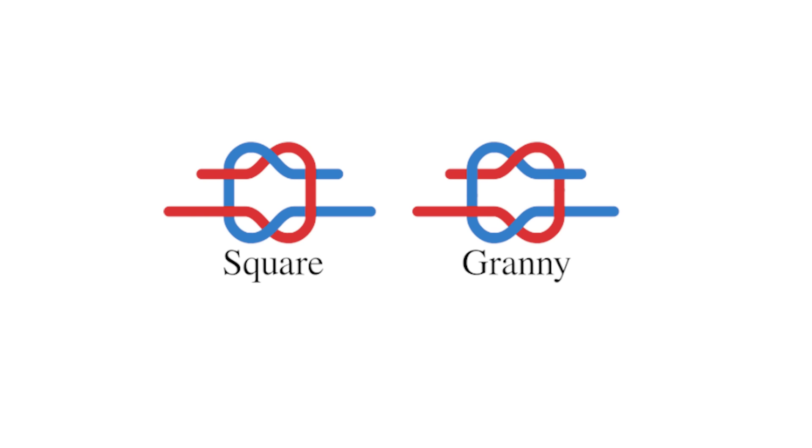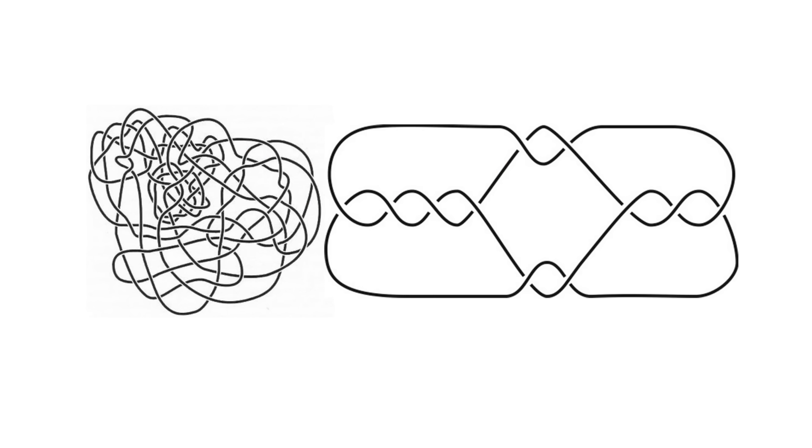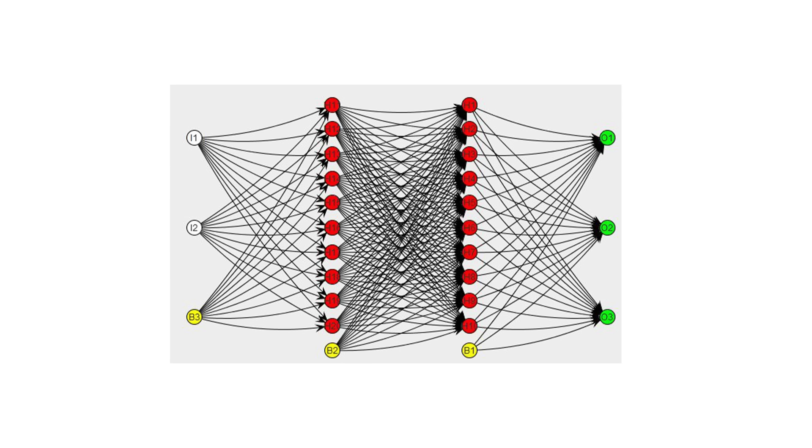Knot theorists' holy grail problem was an algorithm to identify if some tangled mess is truly knotted, or if it can be disentangled to nothing. The good news is that this has been accomplished. Several computer algorithms for this have been written in the last 20 years, and some of them even animate the process.